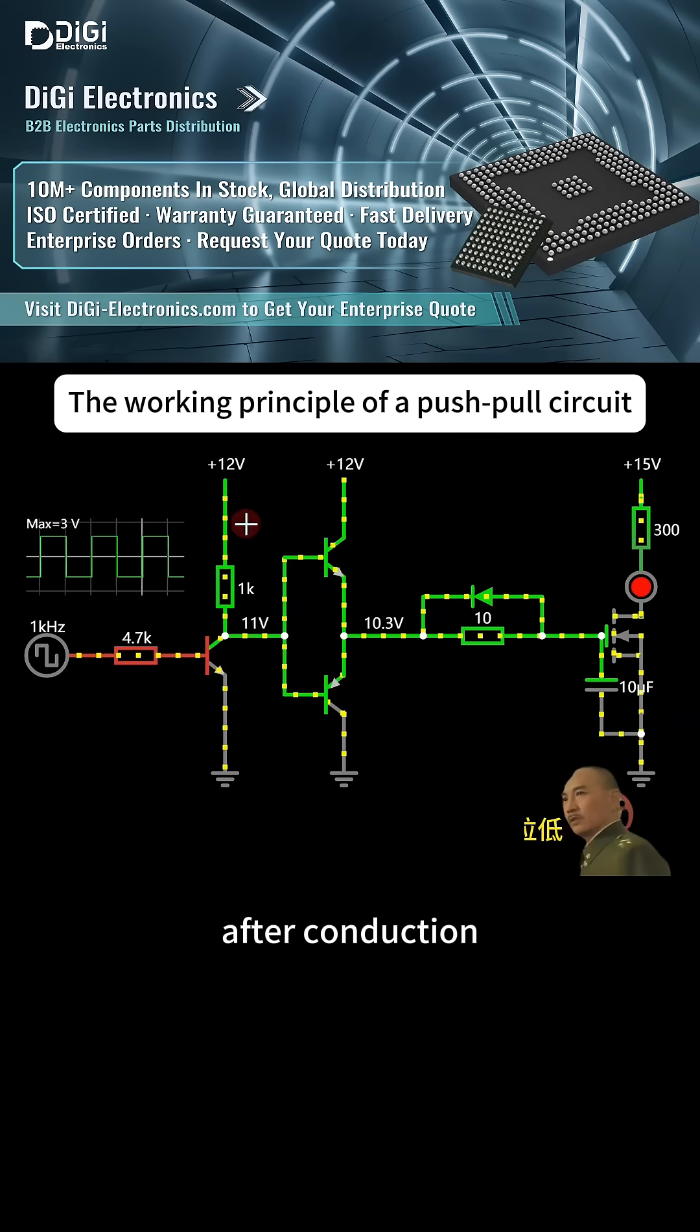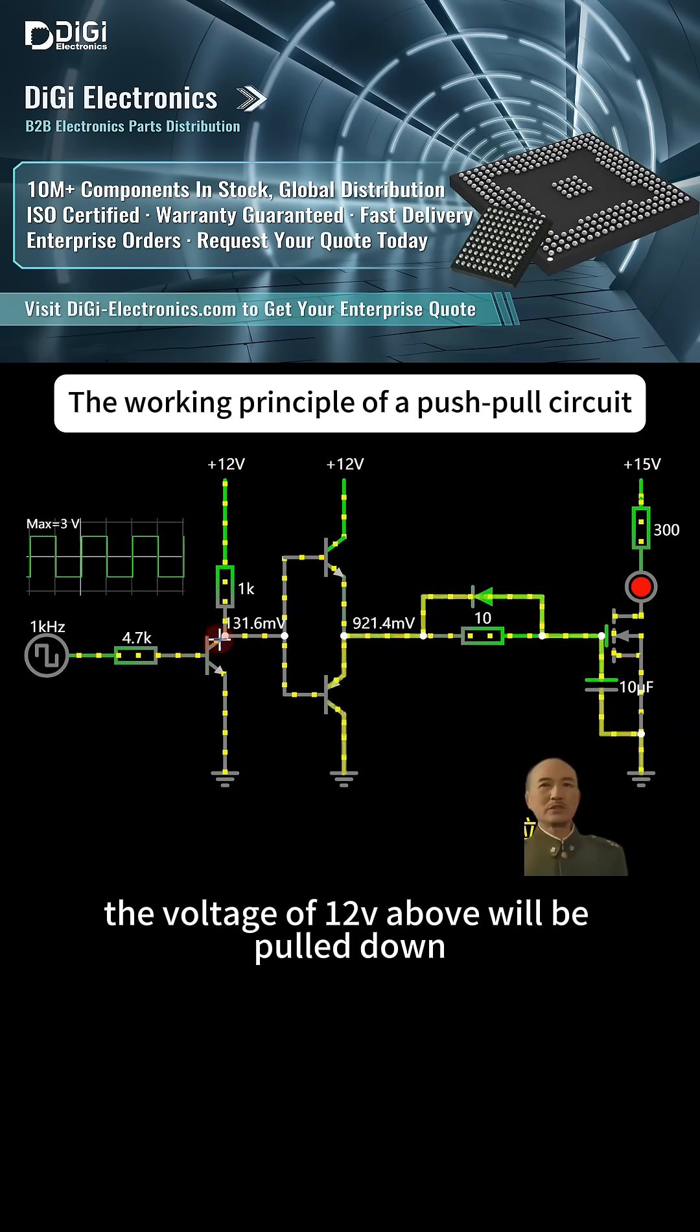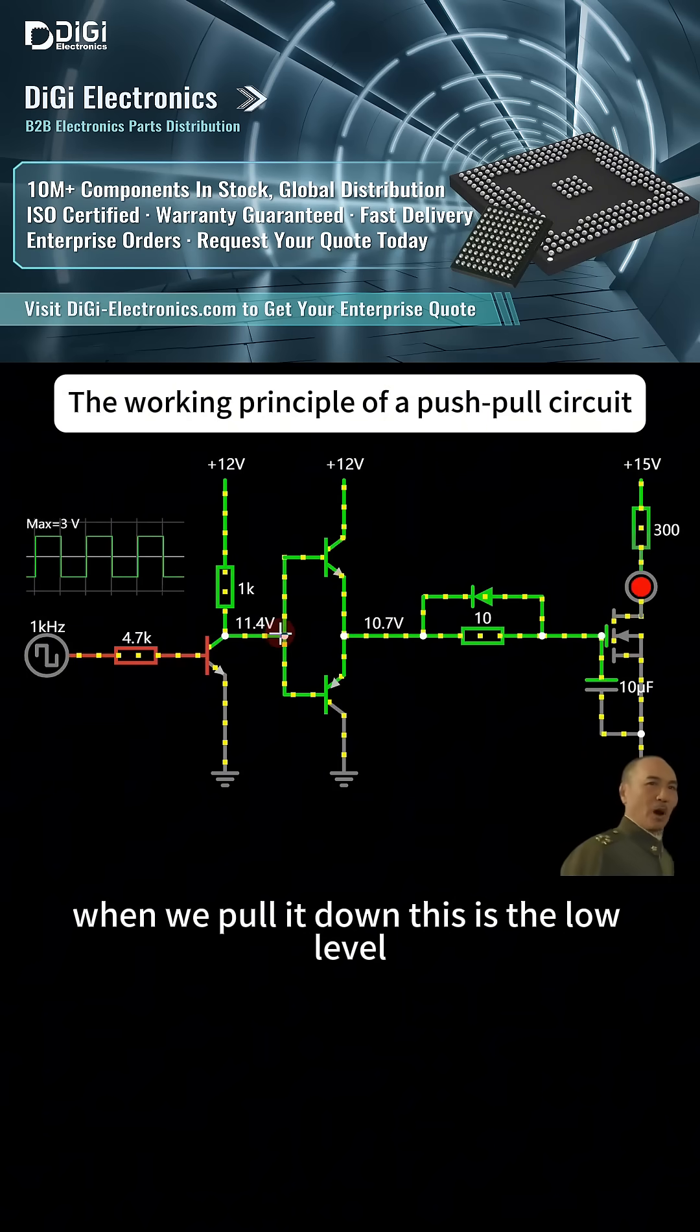The base gets a high level. The transistor will turn on. After conduction, the voltage of 12V above will be pulled down. When we pull it down, this is the low level.